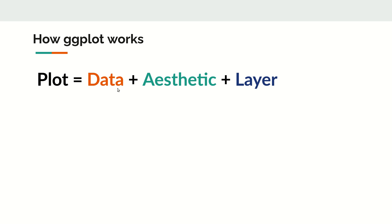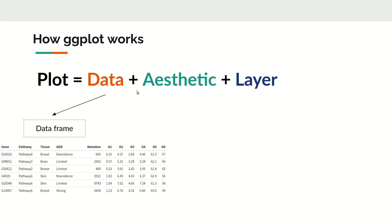Now, how does ggplot2 work? It has three components: the first is the data which we want to plot, the second is the aesthetic, and the third is the layer. So: plot = data + aesthetic + layer. The data must be in the form of a data frame.